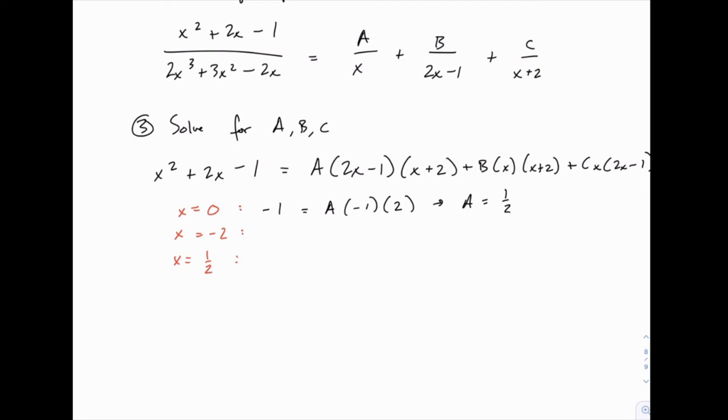When we plug in negative 2, the left hand side simplifies to negative 1, because we have 4 - 4 - 1. And then on the right hand side, anything that has an x + 2 in it, meaning those first two terms will disappear.